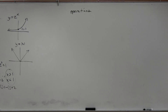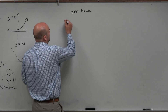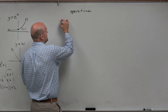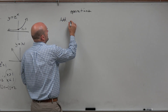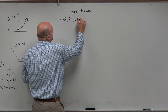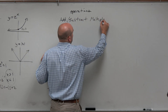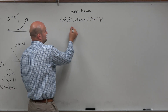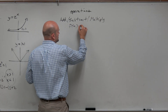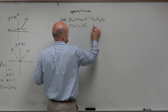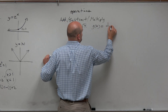When dealing with operations, there are three basic ones we're going to talk about: add, subtract, and multiply. Let's talk about two functions in general — let's say f of x is the square root of x, and g of x is 1 over x.